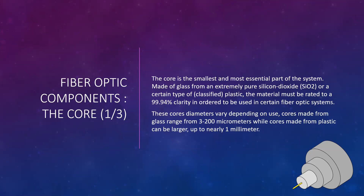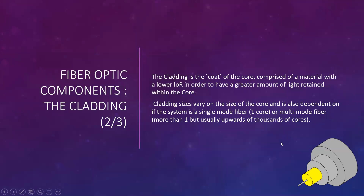The size of these cores varies depending on their use. Cores made from glass can range between 3 to 200 micrometers — which is probably smaller than a pen tip — while cores from plastic can be larger, up to nearly one millimeter. The second component is the cladding, which is the coat of the core. It is comprised of the same material but with a lower index of refraction, in order to retain the greater amount of light within the core so that rather than escaping it bounces back in.